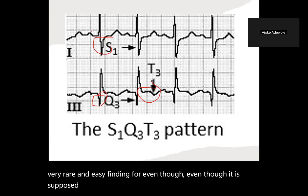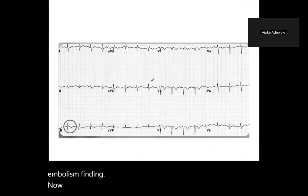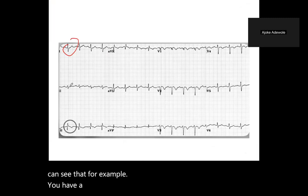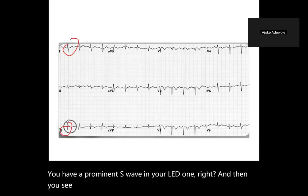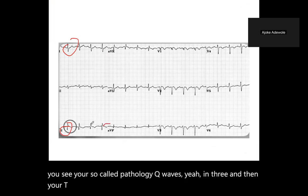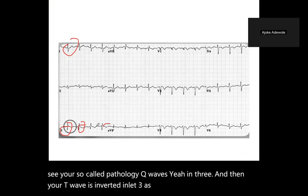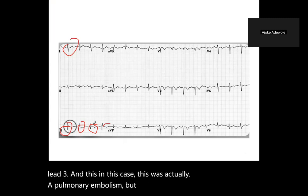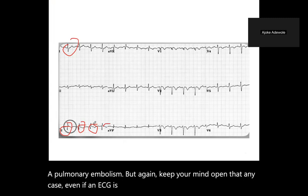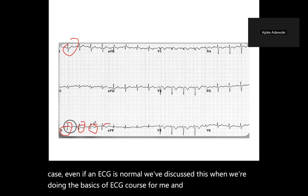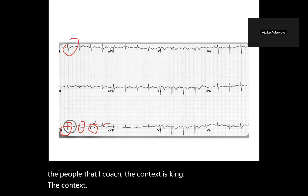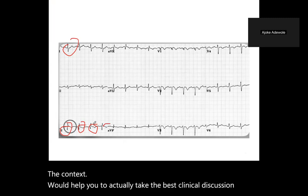Looking at a classical S1Q3T3 ECG: you can see a prominent S wave in lead one, pathologic Q waves in lead three, and T-wave inversion in lead three. In this case it was actually a pulmonary embolism, but again keep your mind open — even if an ECG is normal. The context is king. Context will help you make the best clinical decision regardless of your ECG findings.